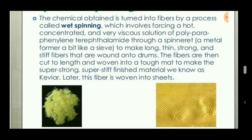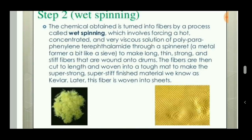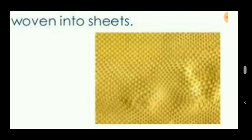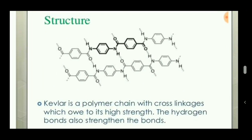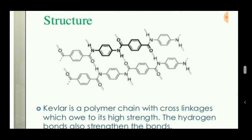The fibers can be wound on drums and used as Kevlar fiber, and later woven into sheets. The weaving of fibers into sheets can be done in various methods such as unidirectional, multi-directional, and bi-directional. Multi-directional weaving has more strength than bi-directional. The structure is a polymer chain with cross-linkages in between, which contribute to its high strength.